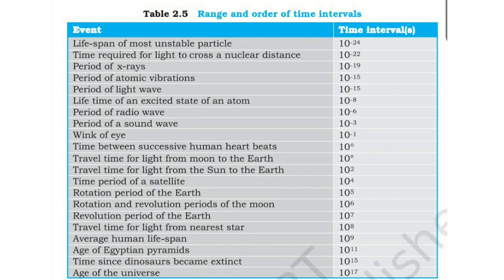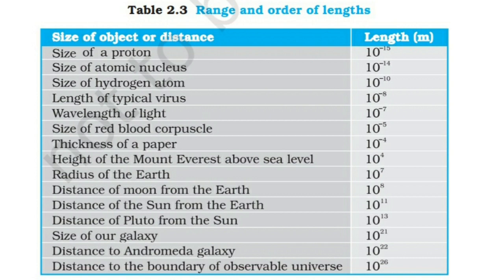Now, this table shows various time intervals measured on the surface of Earth. The shortest time interval measured is 10 raise to minus 24 seconds and the biggest one is 10 raise to 17 seconds. When we find the ratio of biggest to smallest, we will again get 10 raise to 41.